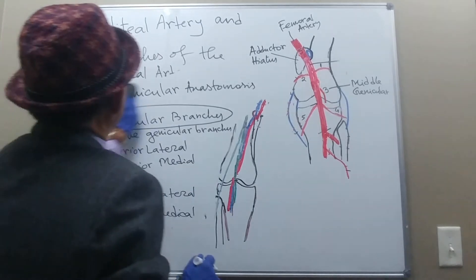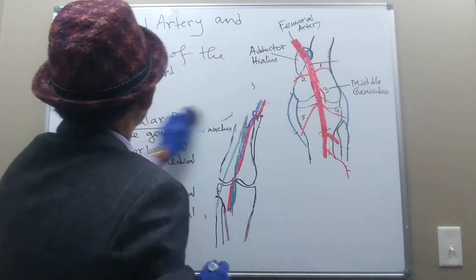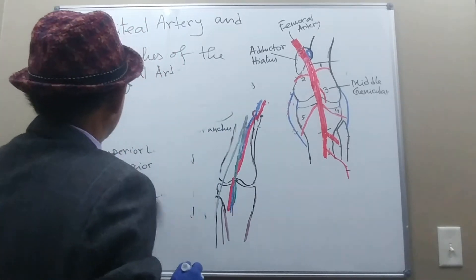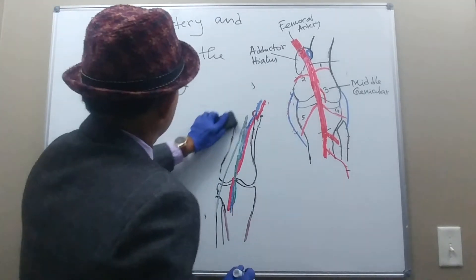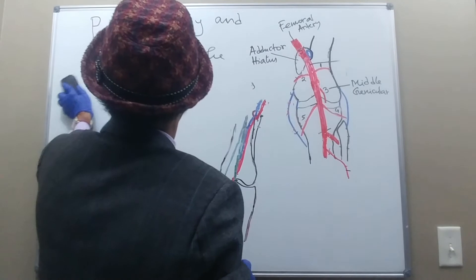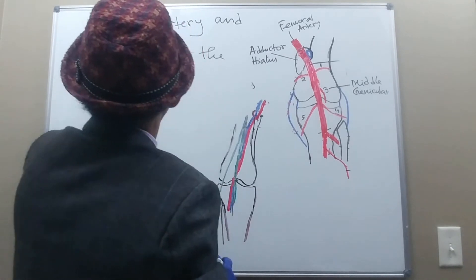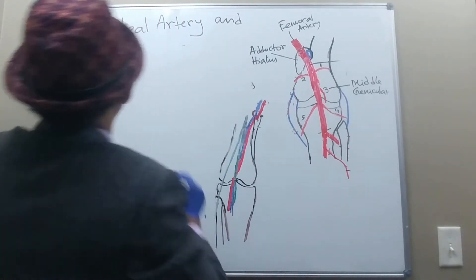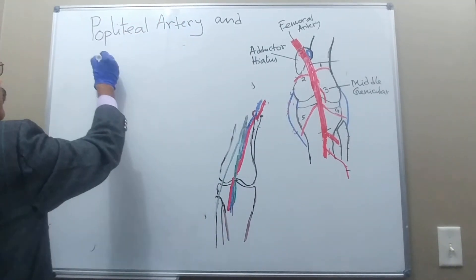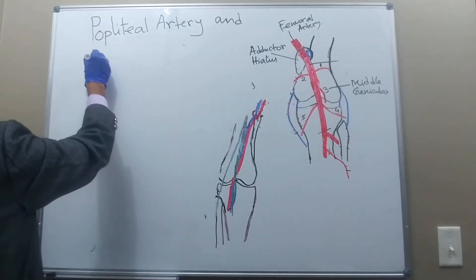The middle genicular branch is very important. It pierces the oblique popliteal ligament and enters directly into the knee joint.